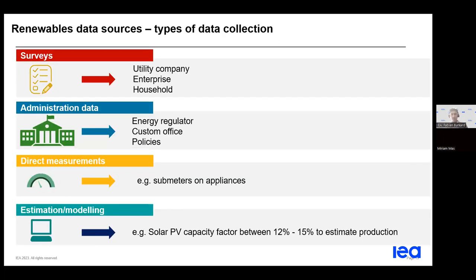Let's have a closer look at the different types of data collection. Surveys and automatic transfer of data are the best ways to collect data directly. However, surveys in the conventional manner are usually time-consuming and expensive, so it's difficult to carry them out every year. What is generally done is that a survey is made every two or three years, and estimations are consequently made for the coming years.